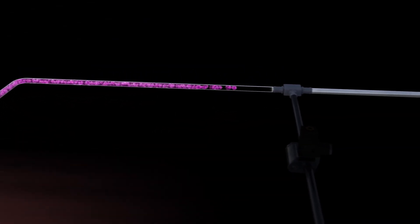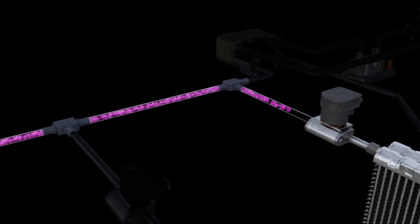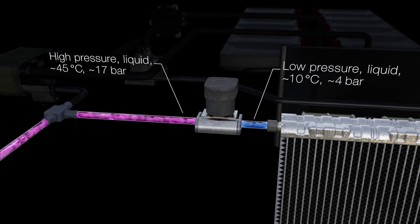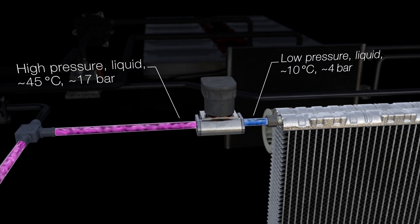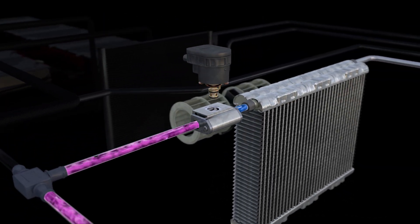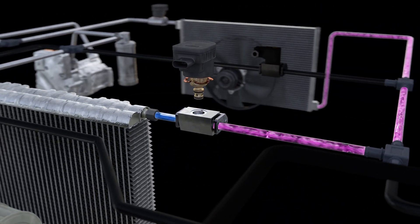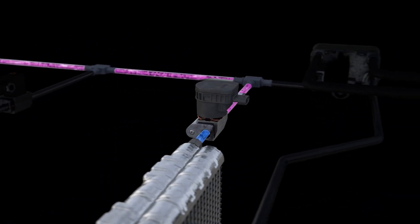This valve is the transition from the high pressure to the low pressure section of the air conditioning circuit. It contains an opening with a small variable cross section. The liquid refrigerant has to pass through this opening, which reduces the pressure.